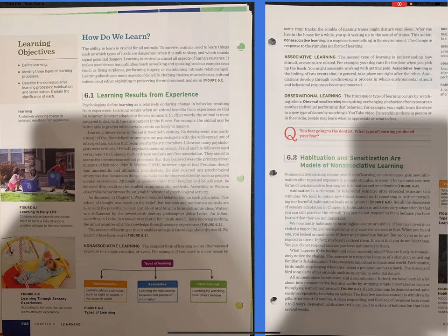This school of thought was based on the belief that humans and non-human animals are born with the potential to learn just about anything. In formulating his ideas, Watson was influenced by the 17th century philosopher John Locke. An infant, according to Locke, is a tabula rasa, Latin for blank slate. Born knowing nothing, the infant acquires all of its knowledge through sensory experiences.